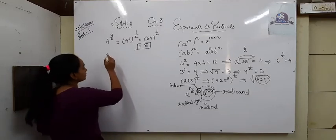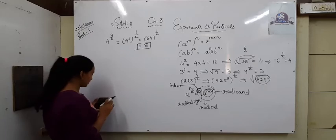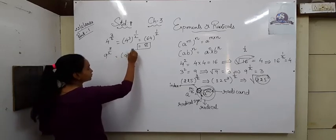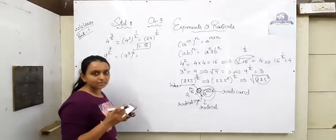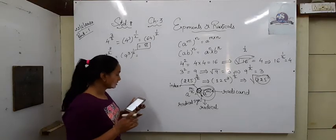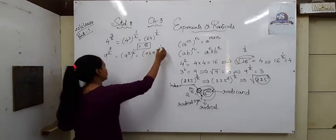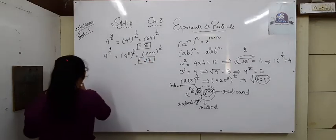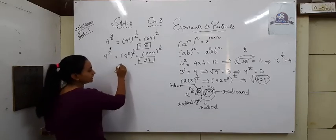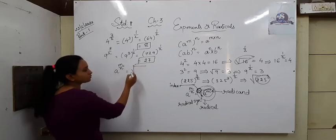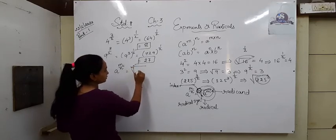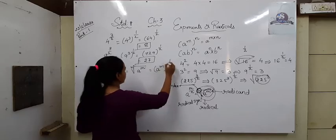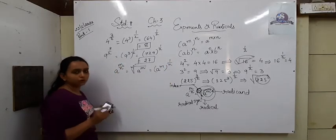Similarly, suppose nine raised to three upon two. So nine raised to three, raised to one upon two. Nine raised to three: nine nines are eighty-one, and eighty-one nines are seven hundred and twenty-nine, raised to one upon two. The square root of seven hundred and twenty-nine gives twenty-seven. In general, A raised to m upon n equals the n-th root of A raised to m. Otherwise we can write it as A raised to m, raised to one upon n. This is for positive rational numbers.